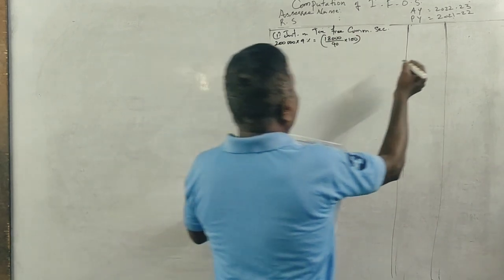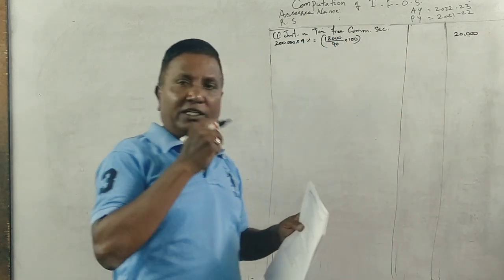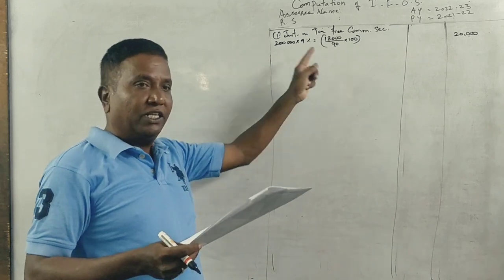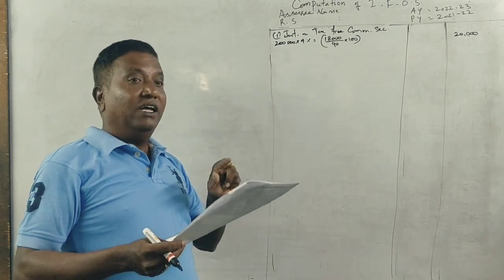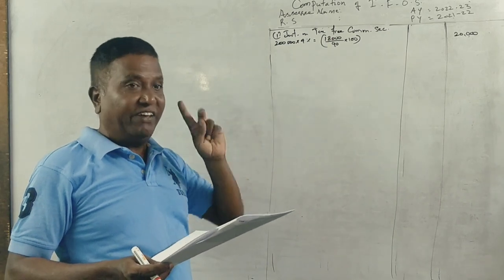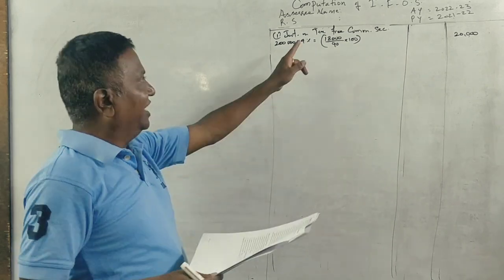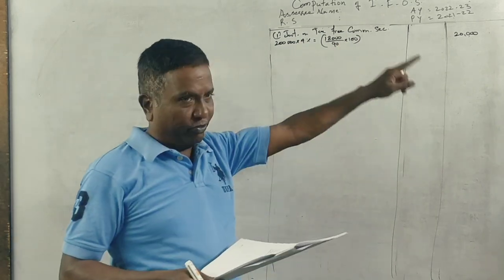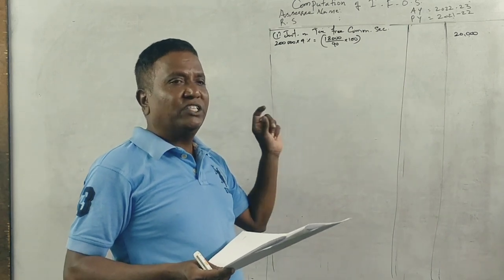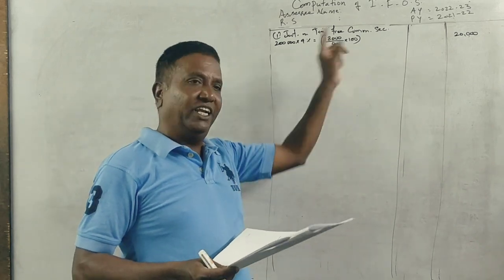This part is 2,000. This part 2,000, correct. Tax-free commercial in the company model. XYZ company limited 18,000 divided by 90 into 100.